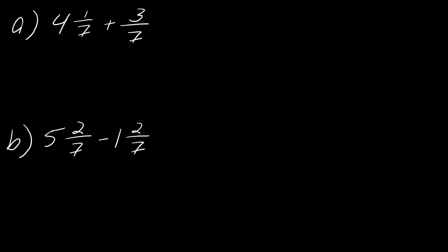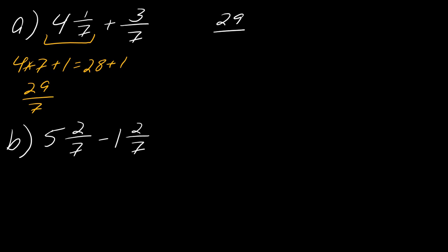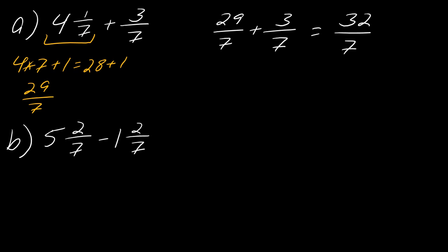I have two more examples with mixed numbers. First, write them as improper fractions and then add them together, and hit play when you're ready. For the first one: I'll work on 4 and 1 seventh. I take 4 times 7 plus 1, which is 28 plus 1, so this is 29 over 7. So I'm going to take 29 over 7 plus 3 over 7. Now I can finish the addition: this will be 32 over 7. I can't simplify that any further, so we're good to go.